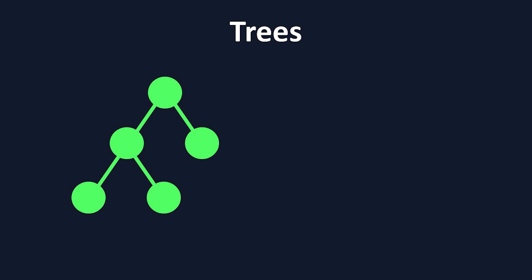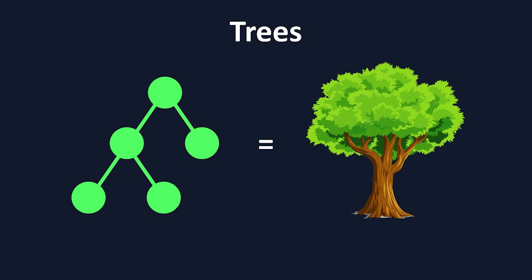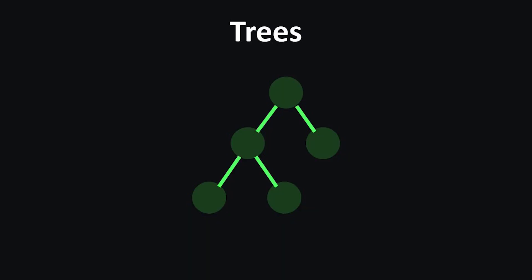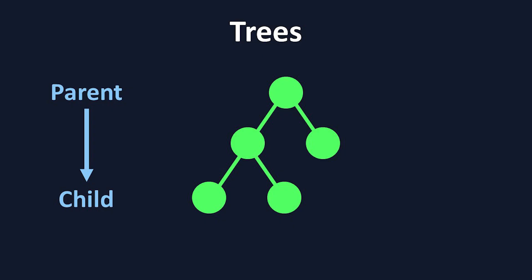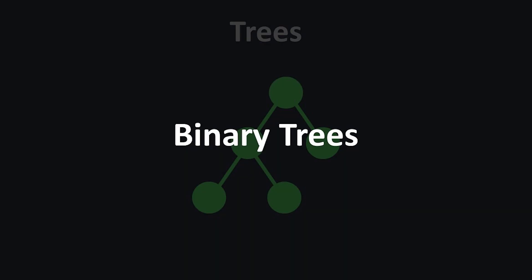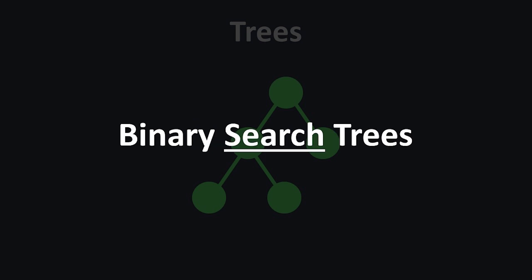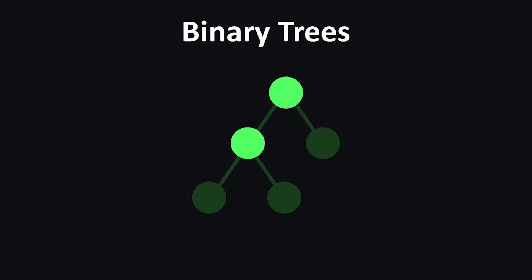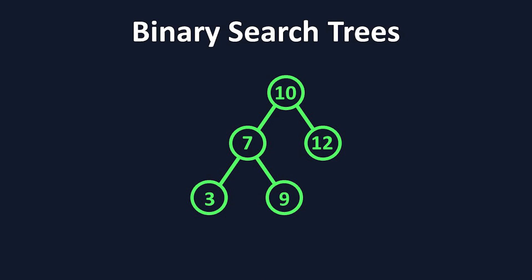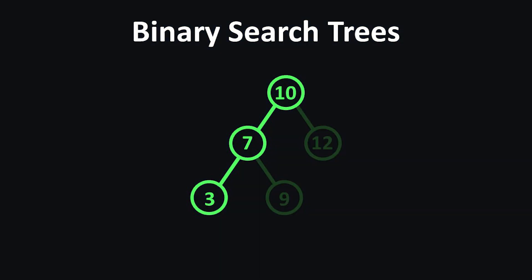Trees are a category of data structure that, as you might have guessed by the name, resemble trees. Trees have nodes, which are connected to each other by edges. The first node in a tree is called the root node. Nodes have a parent-child direction, where one node is a parent node that leads to another node called a child node. Sometimes people refer to parent nodes as just regular nodes, and the child nodes as leaves. In this video, we'll be talking about binary trees, and in particular, binary search trees. A binary tree is a tree where the parent node has up to two children nodes. A binary search tree is a type of binary tree where all children nodes on the left are less than the parent node, and all right children nodes are greater than the parent node.